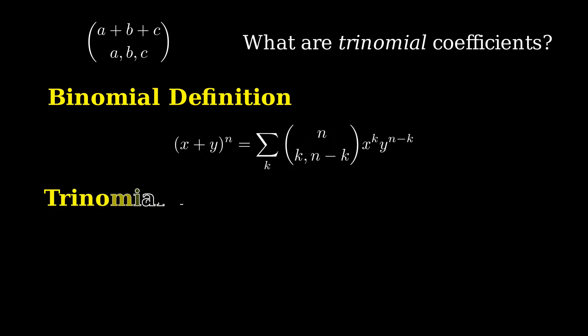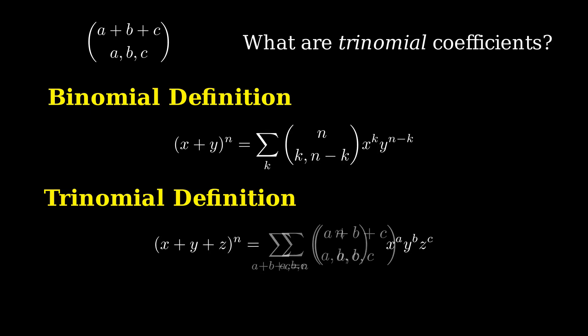Similarly, we can define the trinomial coefficient n choose (a, b, c) as the coefficient of x^a y^b z^c in (x + y + z)^n. Following your nose, you'd quickly realize that a plus b plus c must be n for this to make any sense. That explains why we call it a trinomial coefficient, but this way of defining it doesn't give us a great story interpretation to use in bijective proofs, so let's think about it in another way.